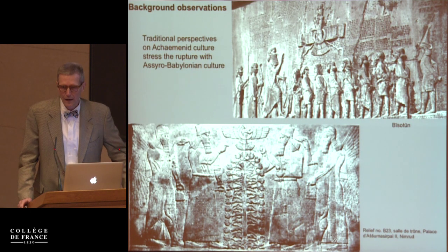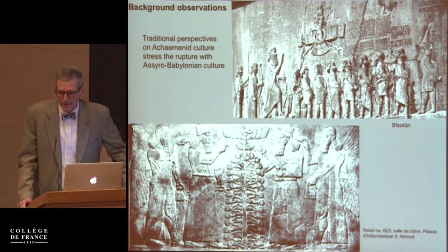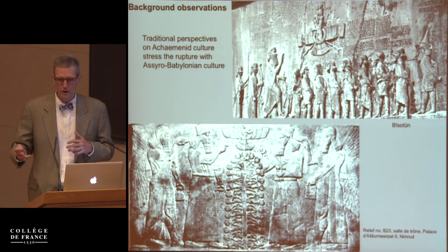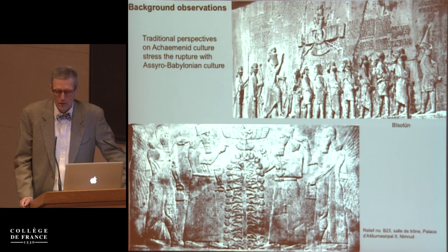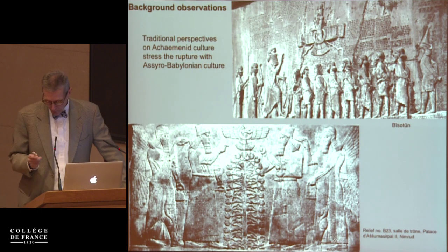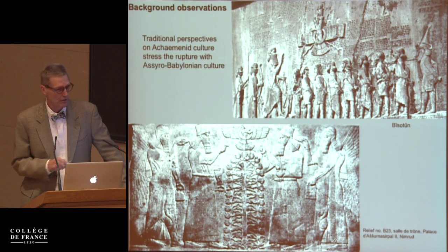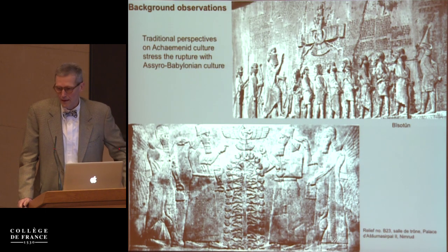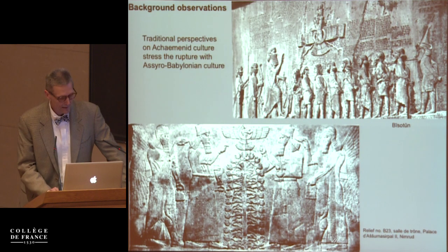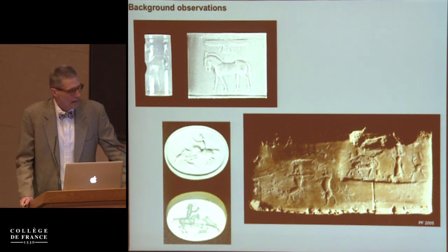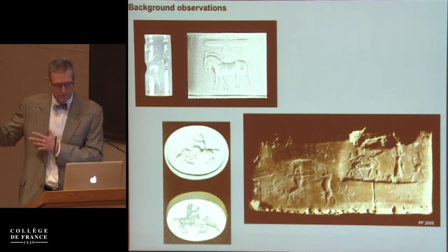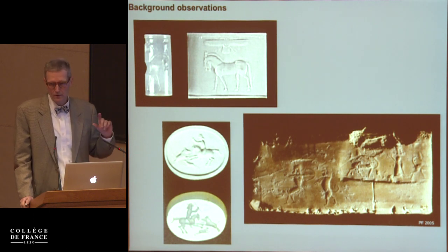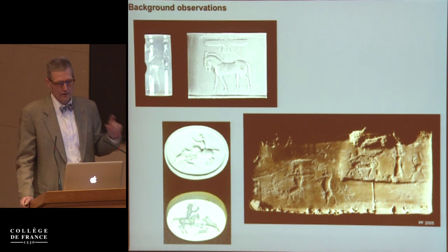Another issue that could use some discussion is that, traditionally, in approaching Achaemenid religion, we see the Achaemenids as a massive rupture from traditional Assyro-Babylonian culture. When we look for explanations, we don't look to the Assyrian evidence but to the Eastern evidence. This perspective of relying on an Eastern rather than Western approach may be one reason why seals have traditionally not figured very prominently in the discussion of Achaemenid religion.